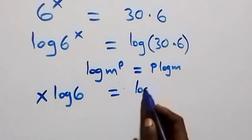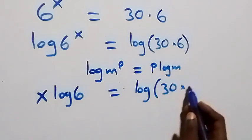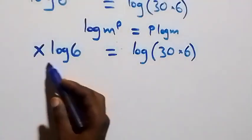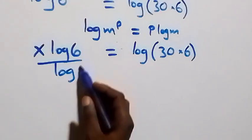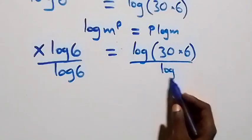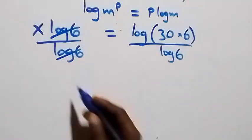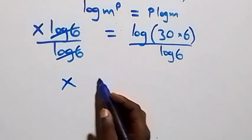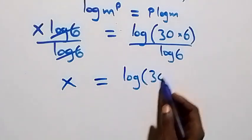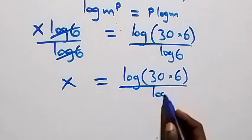So x log 6 equals log of 30 times 6. From here we divide both sides by log 6 — divide this side by log 6 and also divide this side by log 6. The log 6 cancels with each other, and we have x equals log(30 times 6) over log 6.